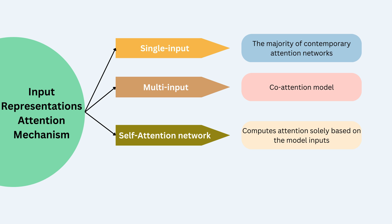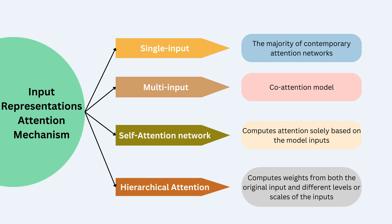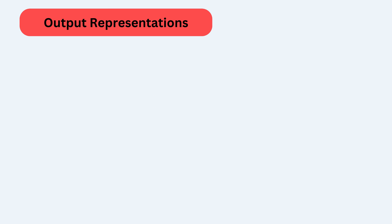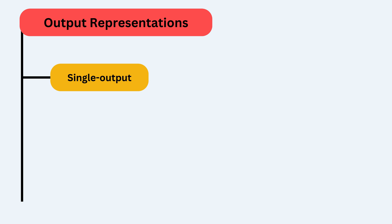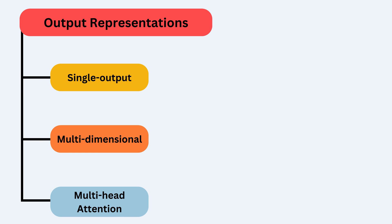The hierarchical attention mechanism computes weights from both the original input and different levels or scales of the inputs. Also recognized as fine-grained attention, it finds applications in image classification tasks. Within output representations, there are distinct approaches: single-output, multidimensional, and multi-head attention mechanisms. Single-output representation is the prevalent approach where attention mechanisms process one feature at a time, computing weight scores for each.